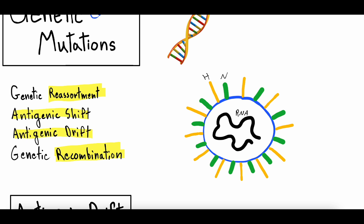Antigenic drift is when a virus's mutations are kind of just drifting slowly towards more and more viral changes. Let's say a virus has 10 different proteins — drift would be if every once in a while one of those proteins changed, and then once in a while another one of those proteins changes. It's a kind of slow drift. Whereas eventually, if there's enough drift, you're going to have a completely different virus, but there's not any big single massive change.